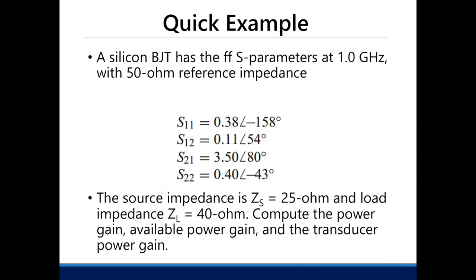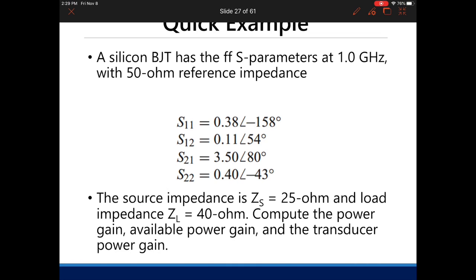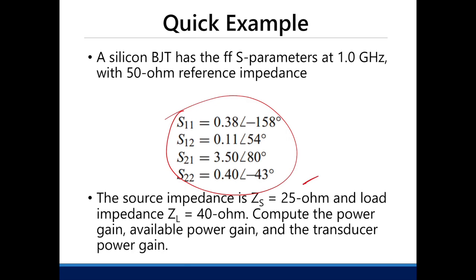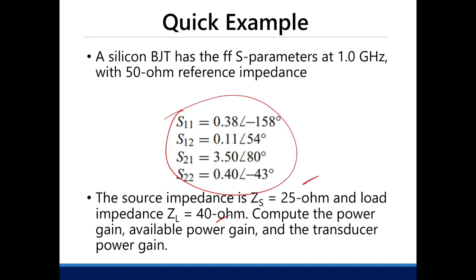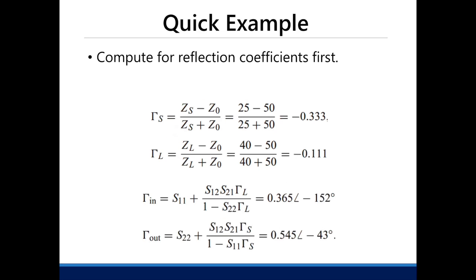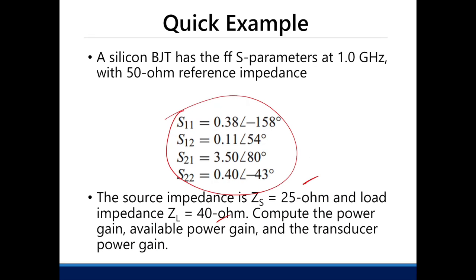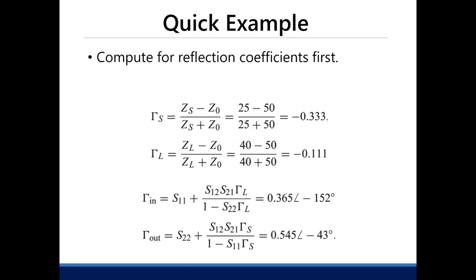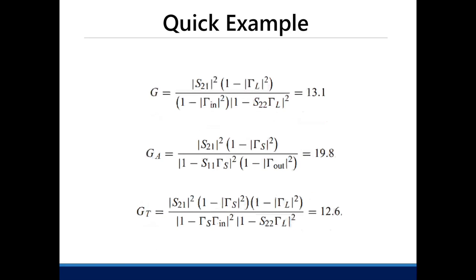Just a quick example. A BJT has the following S-parameters. The source impedance is 25 ohms and the load impedance is 40 ohms. Compute for the power gain, available power gain, and the transducer power gain. First, compute for the reflection coefficients: the source impedance is 25 ohms, the load impedance is 40 ohms, and our reference impedance is 50 ohms. Compute their individual reflection coefficients, then compute gamma_in and gamma_out. Using the formulas for the gains with gamma_L, gamma_in, gamma_out, and gamma_S, solve for the operating power gain, available power gain, and transducer power gain.